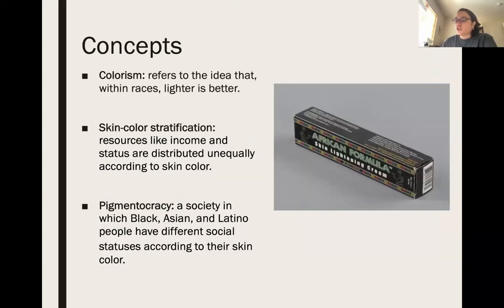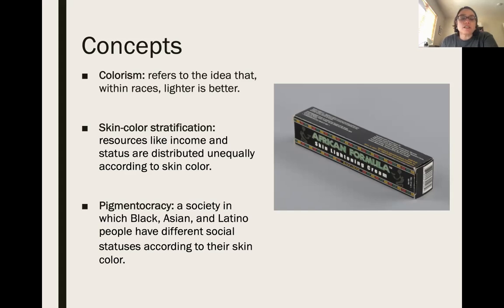The key concepts from this chapter are: colorism, which refers to the idea that within races lighter is better; skin color stratification, which refers to how resources like income and status are distributed unequally according to skin color; and pigmentocracy, a society in which Black, Asian, and Latino people have different social statuses according to their skin color.